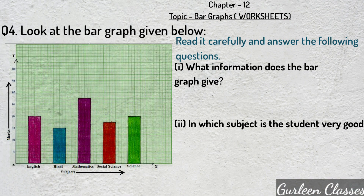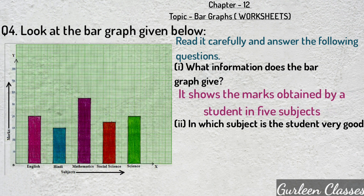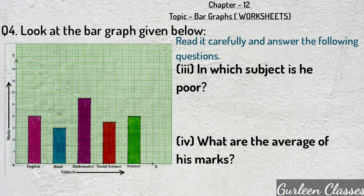Question number 4: look at the bar graph given below. The subjects are written horizontally and the marks are written vertically. Question 1: what information does the bar graph give? It shows the marks obtained by a student in 5 subjects. In which subject is the student very good? In mathematics, as he scored 75 marks. In which subject is he poor? He is poor in Hindi, scoring 40 marks. What are the average marks? The average marks are 56.